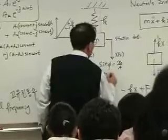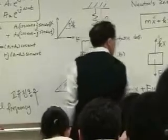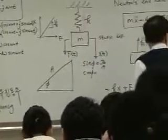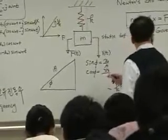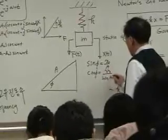And cos phi is equal to v0 divided by omega n A.